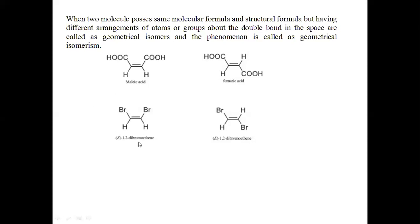If we consider the 1,2-dibromoethene molecule, in one structure both bromine atoms are present on the same side of the double bond, and in the next molecule the two bromine atoms are present on the opposite side of the double bond. That is why these two molecules are called geometrical isomers of each other and the phenomenon is called geometrical isomerism.